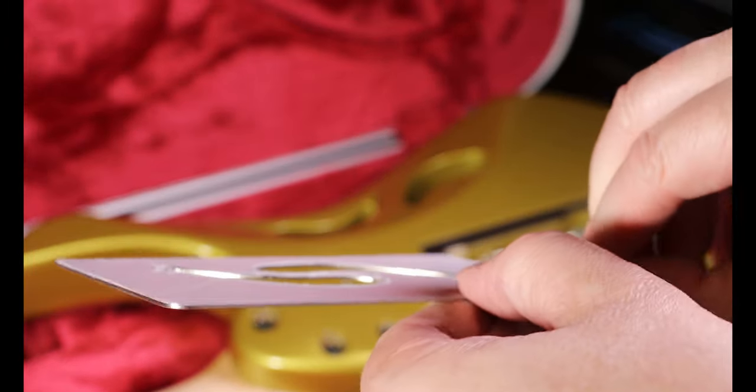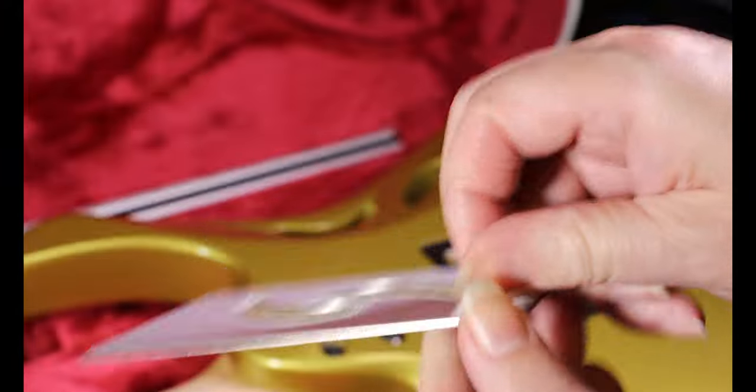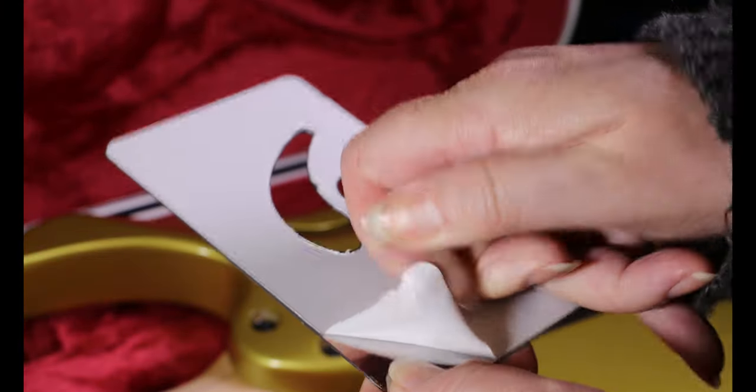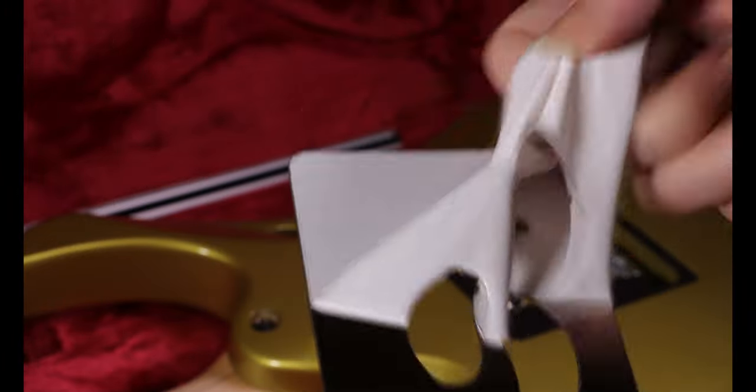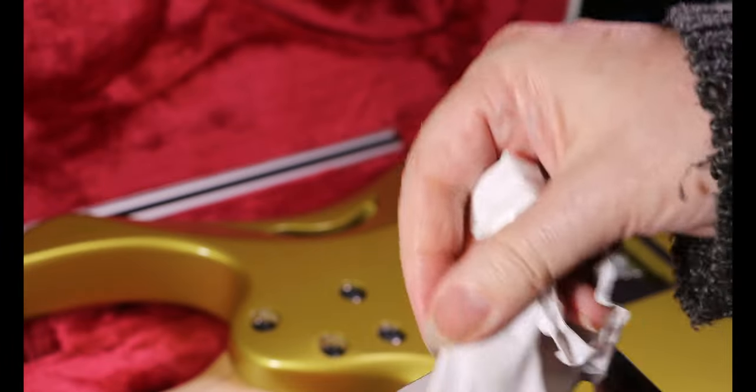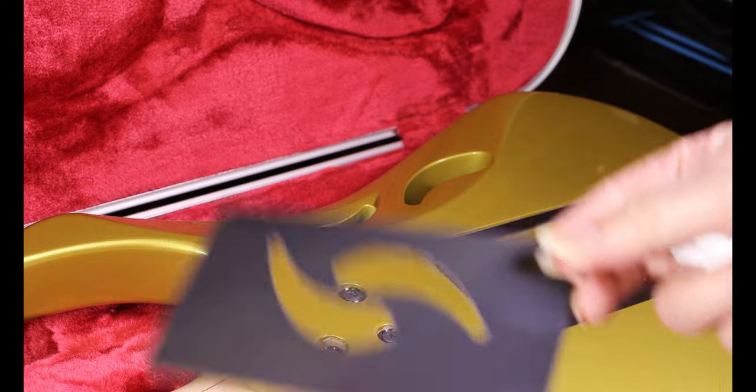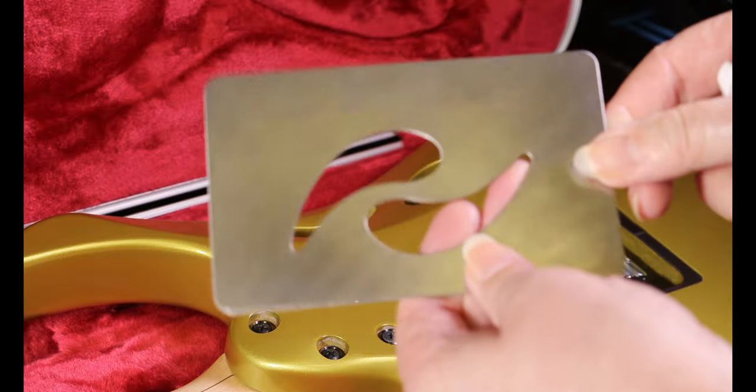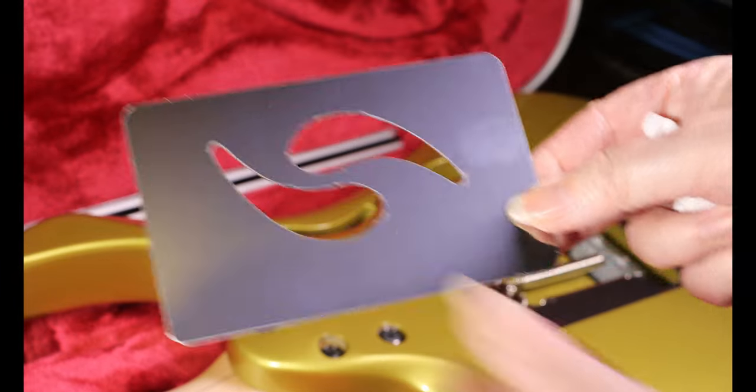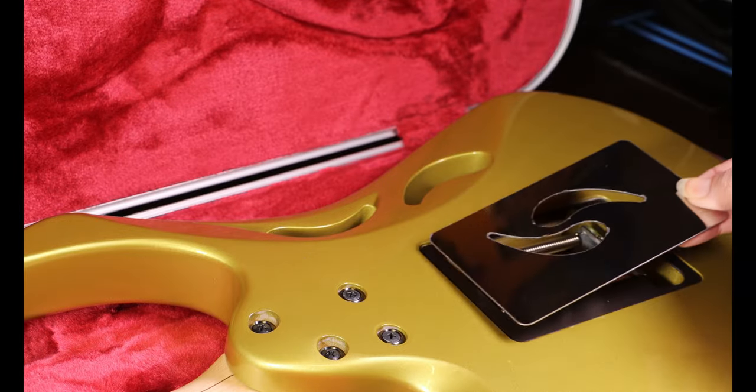This plastic film is really stuck down tight. Hopefully once I get a corner up the rest of it will come off relatively easily. Thankfully as I thought it would, it's coming off a lot more easily now and I can see why it was there now because that metal surface is quite shiny and scratches will probably show up on it.